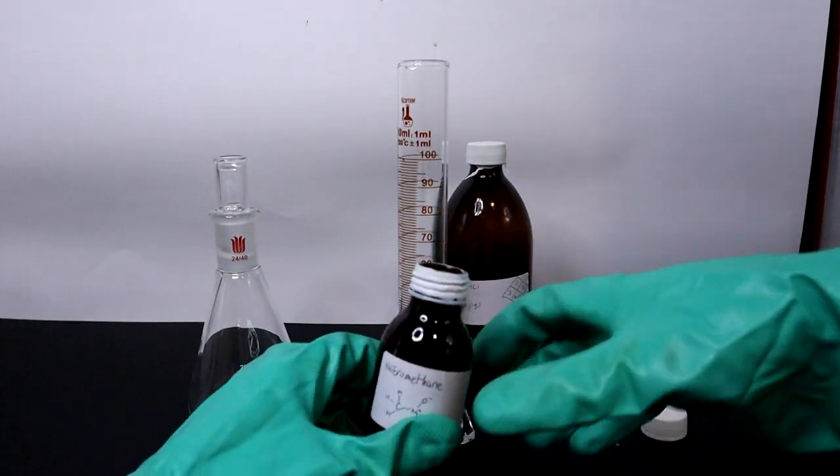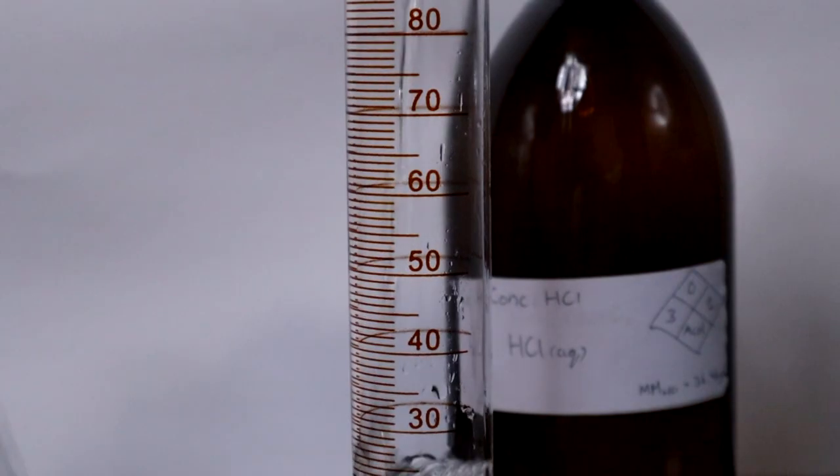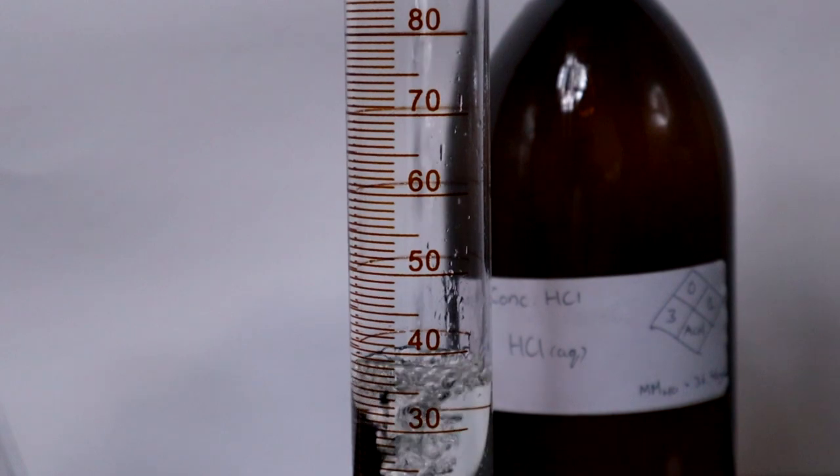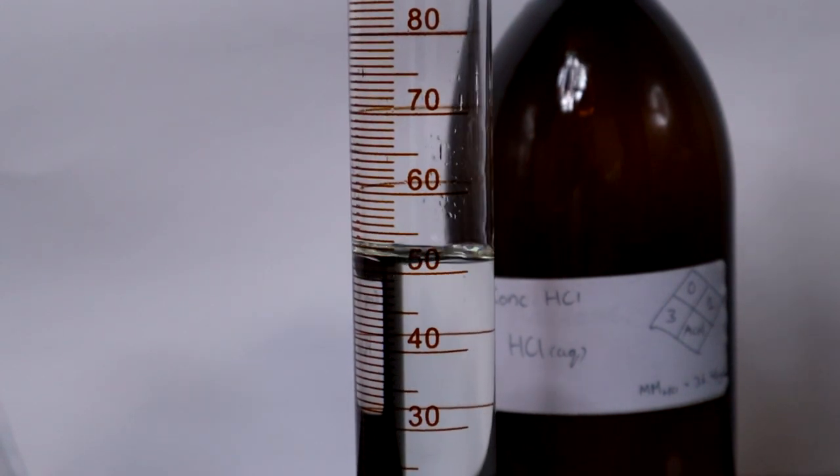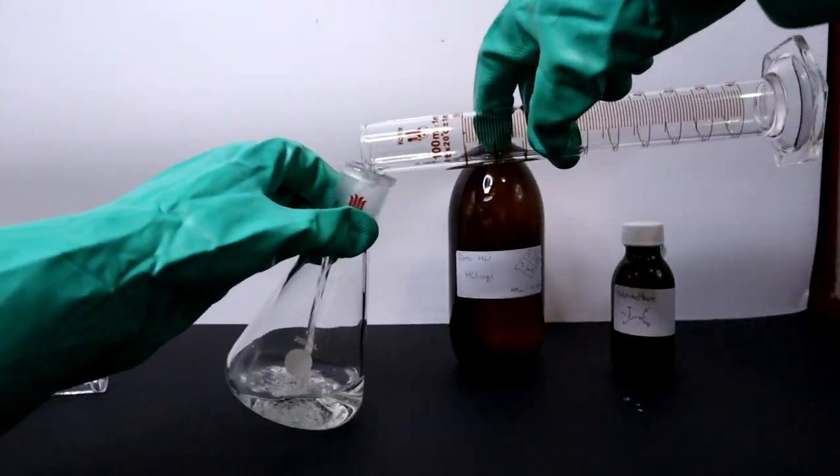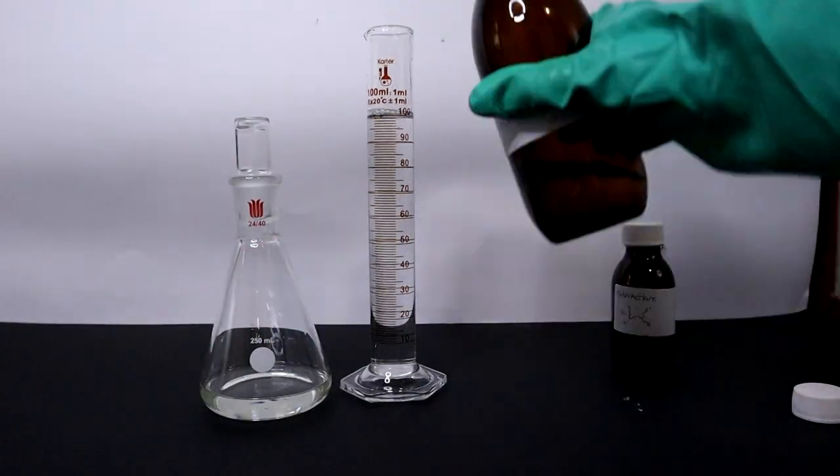I measured out the nitromethane first using a graduated cylinder. Both the nitromethane and hydrochloric acid were then transferred into a 250 milliliter Erlenmeyer flask.